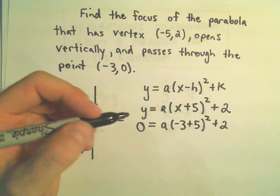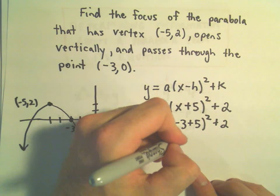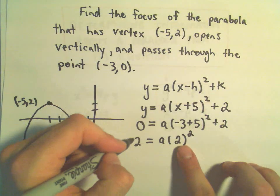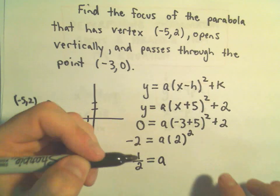I'm going to subtract the 2 over. Inside the parentheses, we would have 2 squared, or 4. If we divide both sides by 4, we'll get negative 2 over 4, or negative 1/2 as our a value.